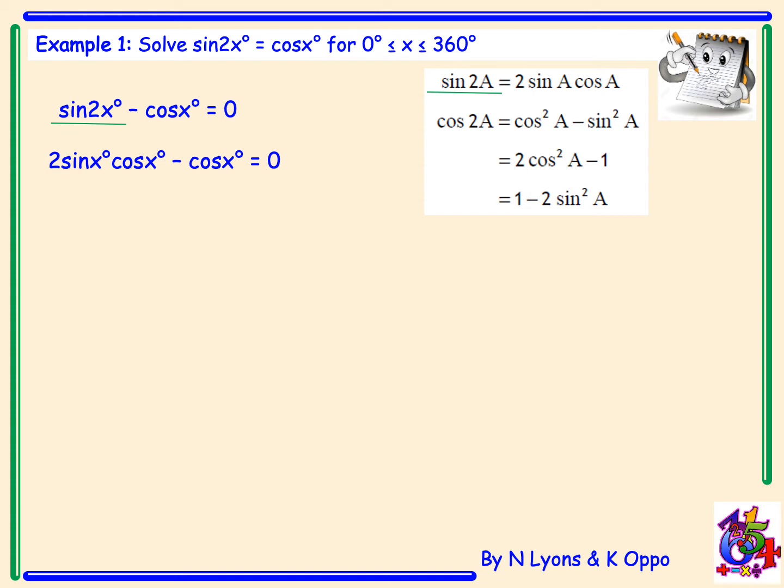This gives us 2sinx·cosx - cosx = 0. From here we have to factorize in order to solve. We check for a common factor — here we have a common factor of cosx — which we take out, leaving us with cosx(2sinx - 1) = 0.